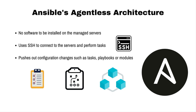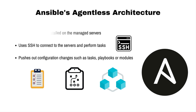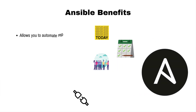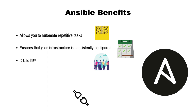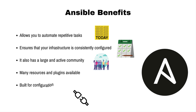Ansible works by connecting over SSH or Windows Remote Management (WinRM) and pushing out configuration changes such as tasks, playbooks, or modules. This makes it much quicker to configure multiple hosts across distributed networks while providing the flexibility to do so without requiring specialized configuration languages. One of the key benefits of Ansible is that it allows you to automate repetitive tasks and ensure that your infrastructure is consistently configured. Ansible's sweet spot is configuration management.